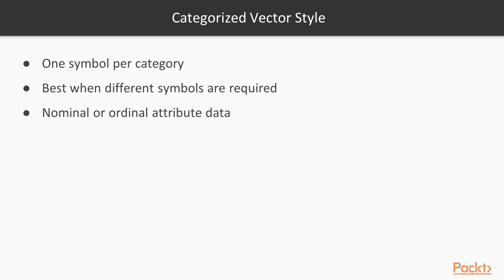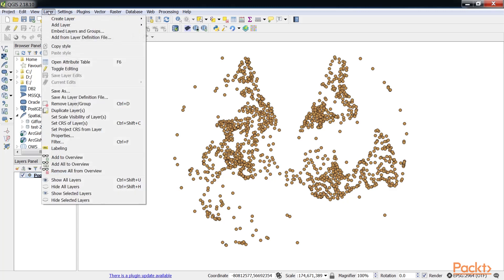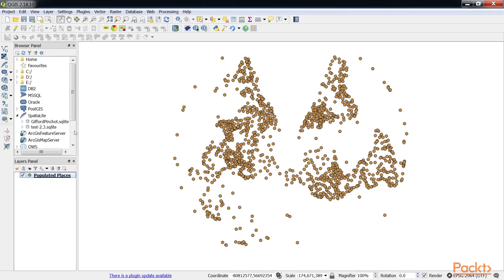The categorized vector style applies one symbol per category of the attribute values. This vector style is best when you want a different symbol that is based on attribute values, such as when styling country polygons or classes of roads lines. The categorized vector style works best with nominal or ordinal attribute data. You can see the categorized style type with parameters for point vector data of schools of populated places. For this, we have added this populated places maps layer to our canvas. In the layer properties, first change to categorized.